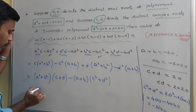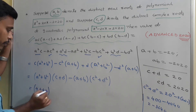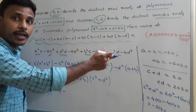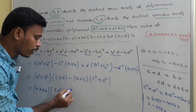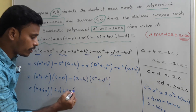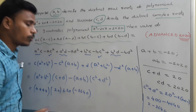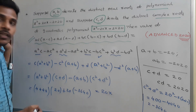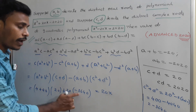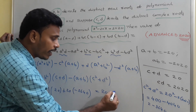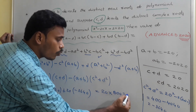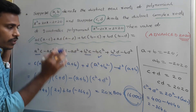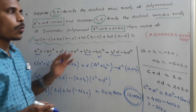So a² + b² = 4440. Now substituting: c + d = 20, a + b = −20, so −(a + b) = 20. The expression becomes 20 × (4440 − 3640) = 20 × 800 = 16,000. So 16,000 is your answer, and this is the question asked in the advanced 2020 examination.